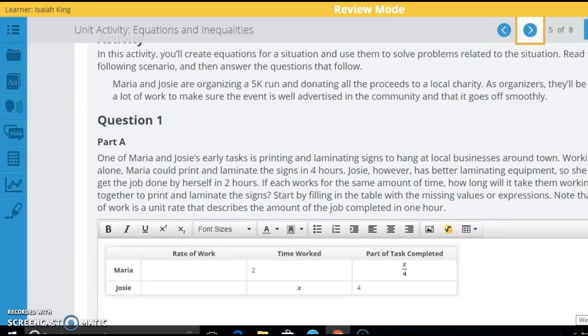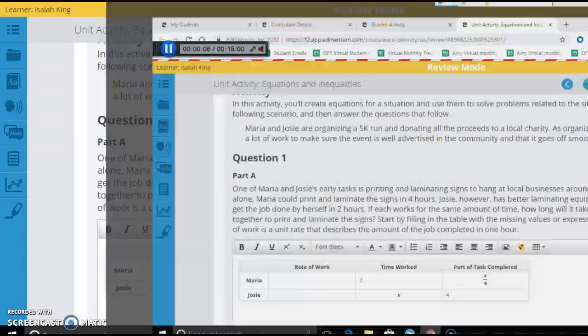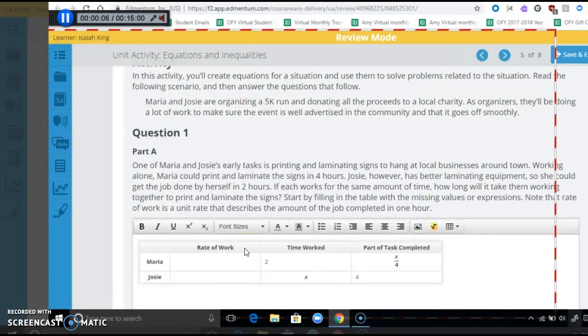All right, we're going through the Unit 3 activity. I'm going to go a little fast since you can stop and rewind this video. So first, we're going to be looking at Maria and Josie. It's just a basic work problem where Maria can do something in four hours and Josie can do something in two hours.